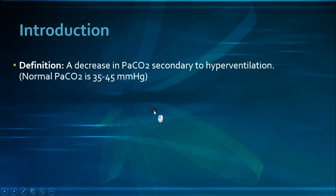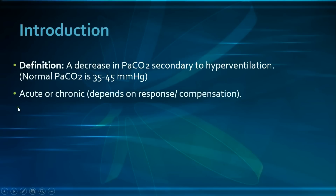Respiratory alkalosis is generally classified into acute and chronic depending on the duration of symptoms and response or the compensation to the primary disturbance, which will be explained in the next video.